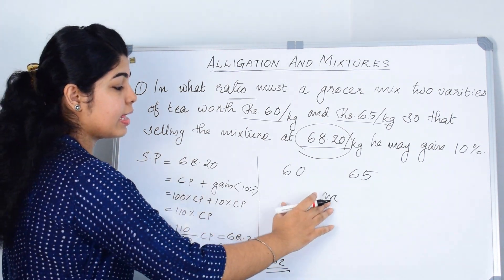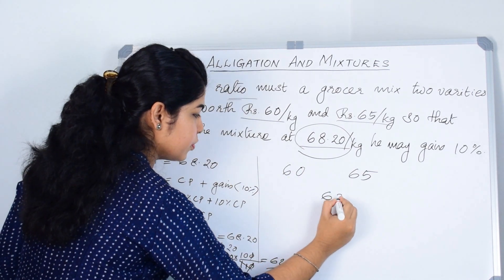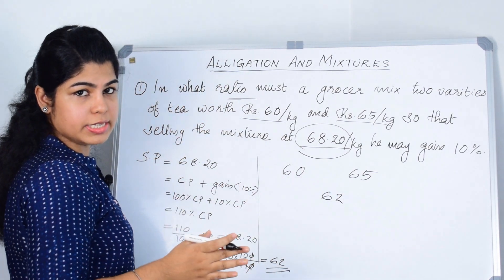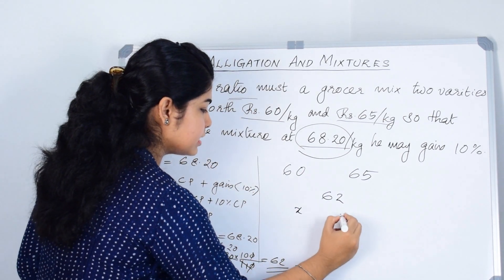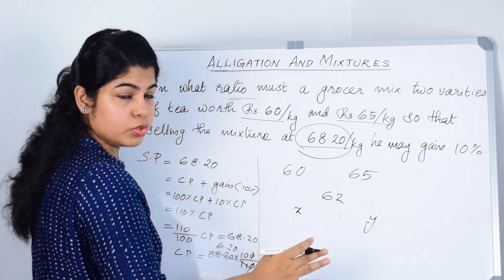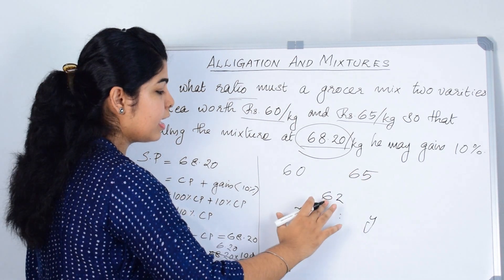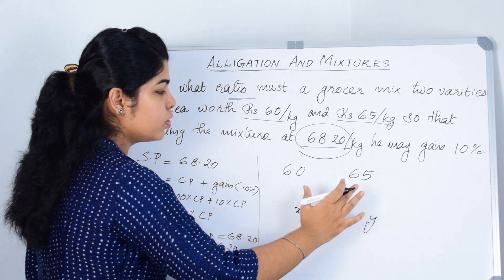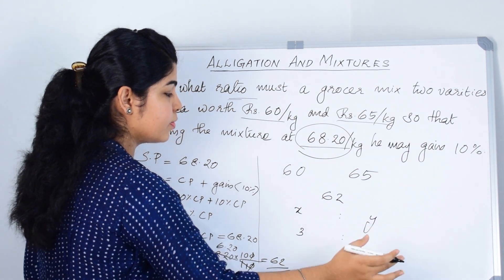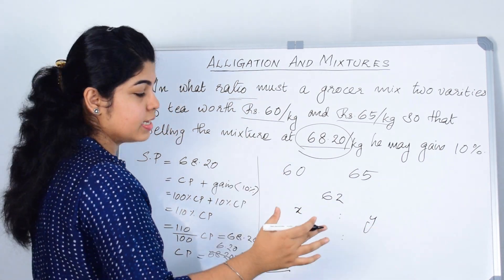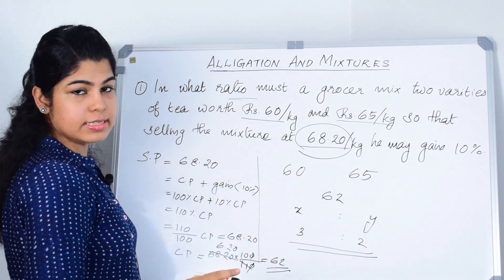Now we can write 62 as the mean price. By rule of allegation, we calculate the ratio X is to Y. To find X, we compute D minus M: 65 minus 62 equals 3. Y equals M minus C: 62 minus 60 equals 2. So our final answer is 3 is to 2.